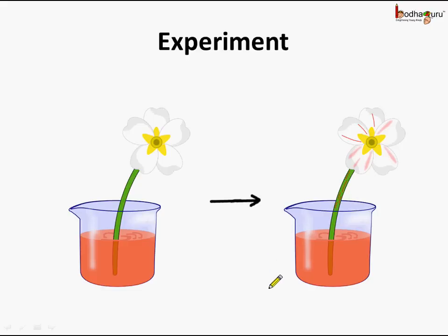What happened? There are small tubes inside the stem which conduct the water — the colored water here — to the other parts of the plant. And hence, this white flower has red spots on it.